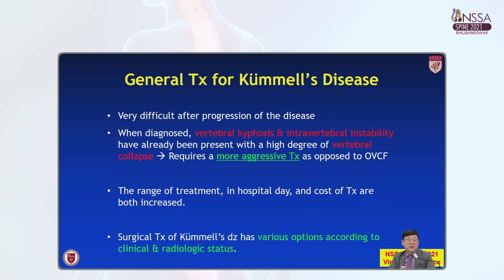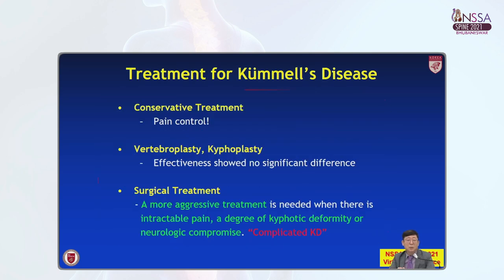Now, let's talk about the general treatment of Kummel disease. It is very difficult after progression of the disease. When diagnosed, vertebral kyphosis and intravertebral instability have already been presented with a high degree of vertebral collapse, requiring more aggressive treatment. The surgical treatment for Kummel disease has various options according to clinical and radiological status — conservative treatment, vertebroplasty or kyphoplasty as minimally invasive treatment, and surgical treatment for the more aggressive or complicated Kummel disease.